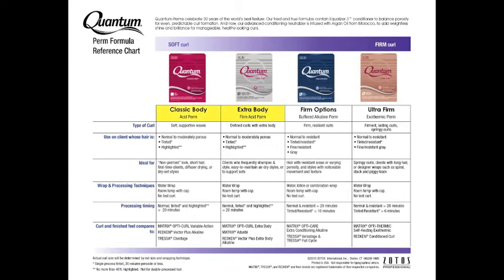So now, what determines which one of those perms to use? Let's go to the type of curl at the top of the chart. Do we want to achieve soft body, or are we looking for a more medium to versatile type of curl? That will determine whether we use the Quantum Classic Body or Quantum Extra Body. To ensure optimal results, always follow manufacturer's directions.